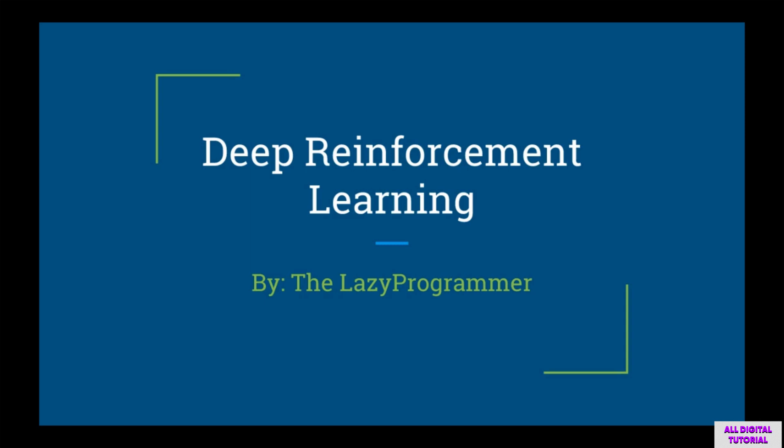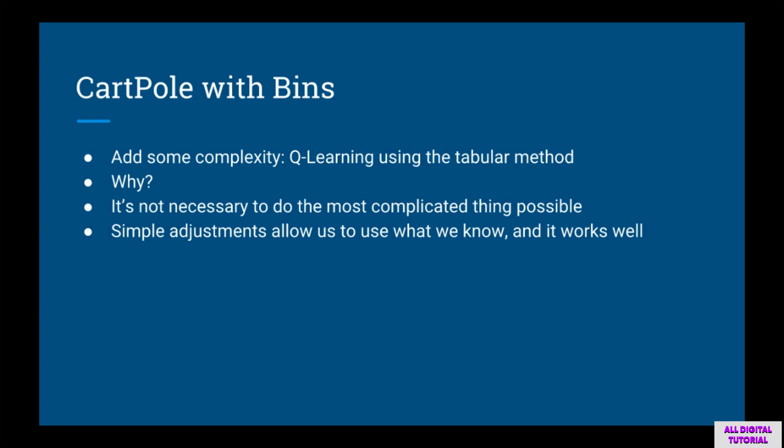Welcome back to Deep Reinforcement Learning, Deep Learning in Python Part 7. In this lecture we are finally going to start doing some reinforcement learning. Instead of doing something ridiculously complicated this early in the course, we're going to take a step back and look at the tabular method again. We want to show that it's not necessary to use the most complicated thing possible — by making some simple adjustments you can make what you know already work pretty well.